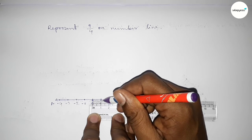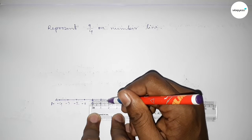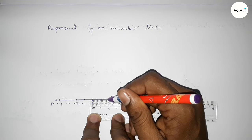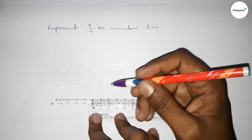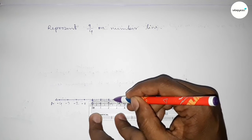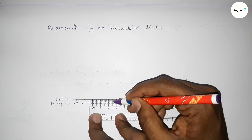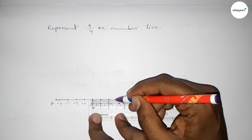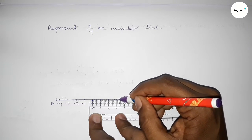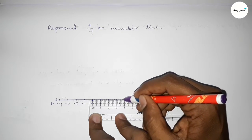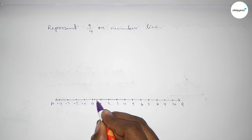Similarly, divide the distance between 1 to 2 — first taking the half, then dividing, so this is approximately 1.25 and this is approximately 1.75. By this way we can divide the distance between any two numbers into four equal parts: first divide into two parts, then divide into four parts.